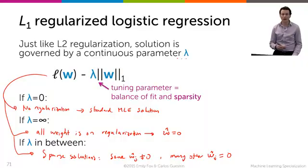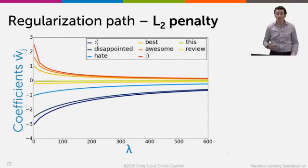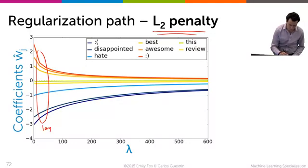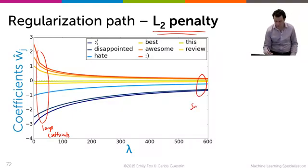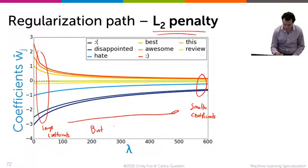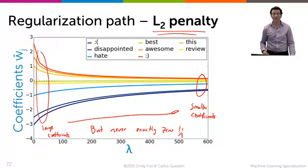So let's revisit those coefficient paths, and here I'm showing the coefficient paths of L2 penalty. You see that when the lambda parameter is low, you have large coefficients learned, and when the lambda parameter gets larger, you get smaller coefficients. They go from large to small but they're never exactly zero.